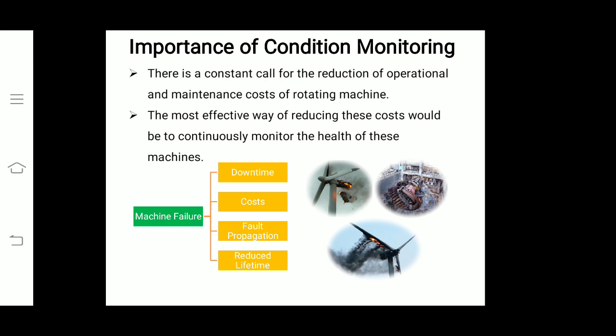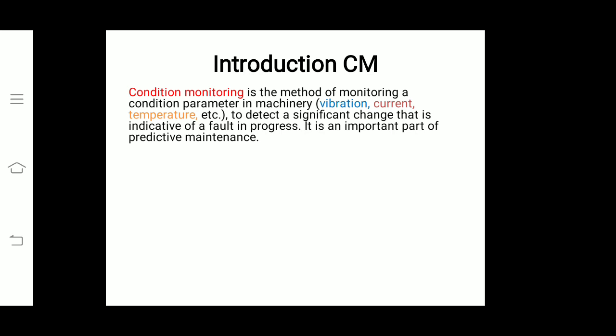The most effective way of reducing these costs is to continuously monitor the health of these machines — this is called condition monitoring. Condition monitoring is a method of monitoring condition parameters in a machine, like vibration, current, temperature, strain, and pressure, to detect a significant change that indicates a fault in progress. For example, if we have a reduction motor and there are some vibration-related issues, we can predict that there are some bearing-related faults developing.